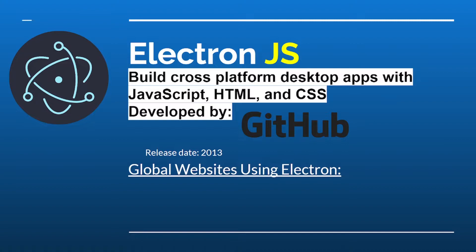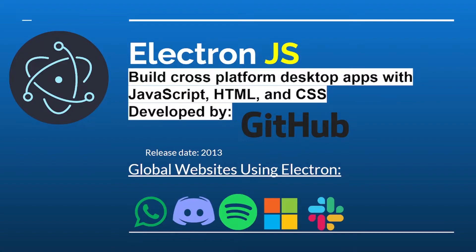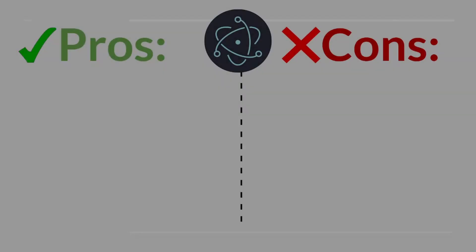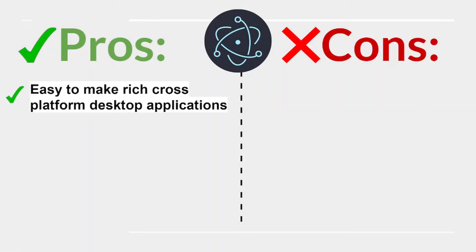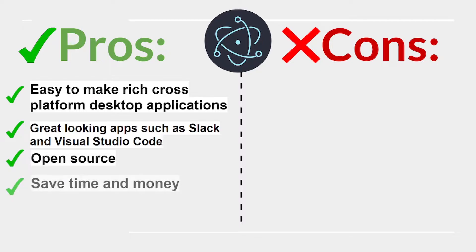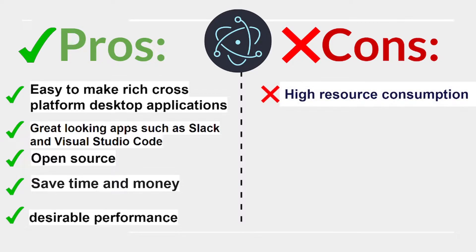Electron.js lets you build cross-platform desktop apps with JavaScript, HTML, and CSS. Developed by GitHub, released in 2013. Global websites using Electron include WhatsApp, Discord, Spotify, Microsoft, and Slack. Pros: easy to make rich cross-platform desktop applications, great-looking apps like Slack and Visual Studio Code, open source, saves time and money, and offers desirable performance.